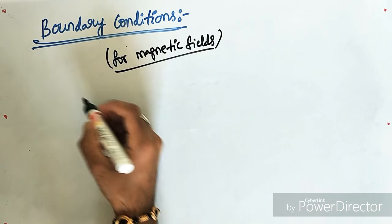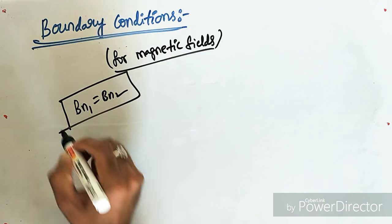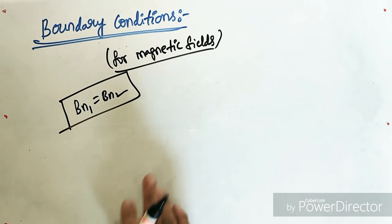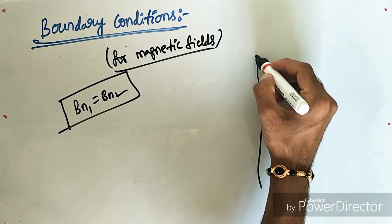As in the previous lecture, I already explained that Bn1 equals Bn2 since no isolated poles or monopoles exist. Now, in this video, I am going to explain about the tangential components of magnetic field.